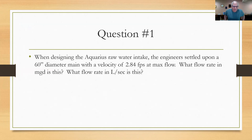So here's the first question that I'm going to ask. When they were designing the Aquarius raw water intake at this plant, the engineers settled upon a 60 inch diameter main, a five foot diameter main, with a velocity of 2.84 feet per second when the plant was at its max flow. So question is what flow rate must that be in MGD? When you figure that out then convert that to liters per second. So there's two answers they're looking for. They're going to use the Q equal AV formula. At least that's what I would use. So again, if you want to stop the video now and work the problem, go ahead and do that. I'm going to proceed to the answer now.